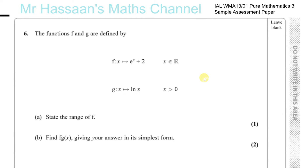Question number six from the sample assessment paper for Pure Mathematics 3, P3 International A-Level Paper. In this question we have different aspects of functions. They've given us two functions: f of x, which is e to the power of x plus 2, defined for all real values of x, and g of x which is ln x, which is forced to be defined for x is greater than zero, because you cannot have the ln of zero or a negative number.